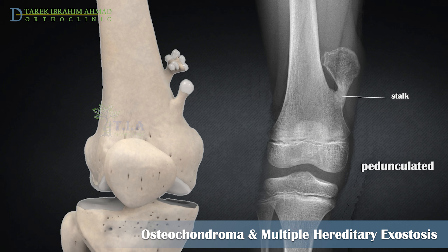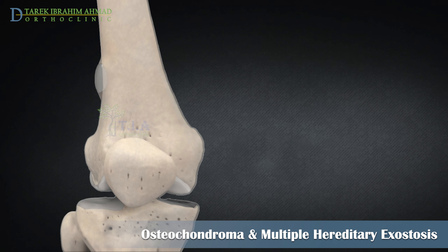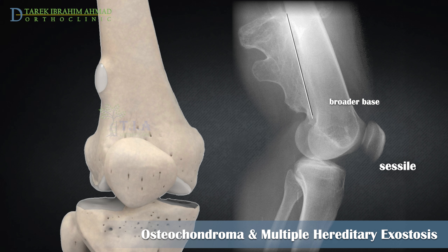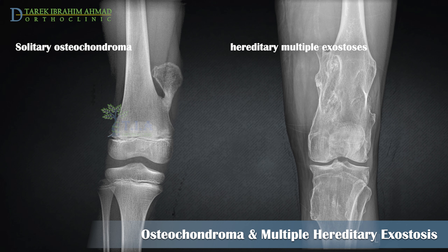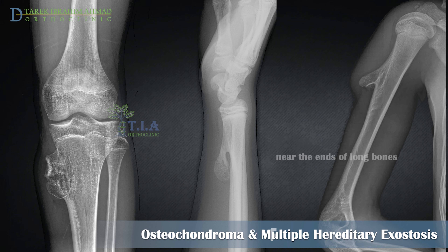They may have a visible stalk and a bulbous cap like a mushroom or cauliflower. Osteochondromas with a visible stalk are called pedunculated; flatter ones with a broader base are called sessile. Pedunculated osteochondromas are more common in solitary cases, and sessile osteochondromas are more common with hereditary multiple exostosis.